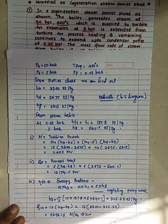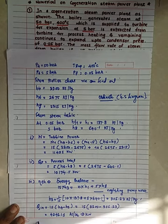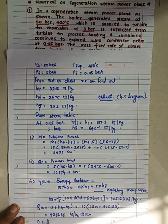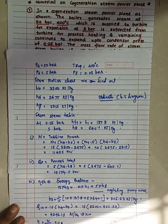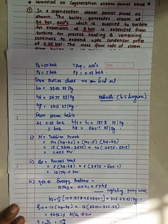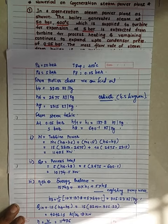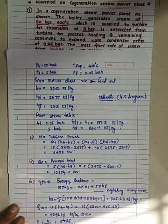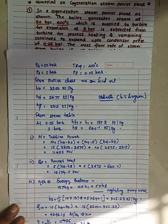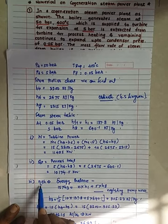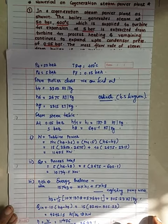Thermal efficiency of the plant: η = W / Q-in = 11,475 / 43,421.05 = 26.43%. This is the third answer — the thermal efficiency of the cogeneration power plant.